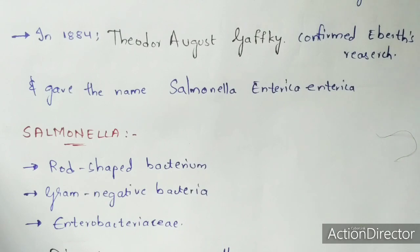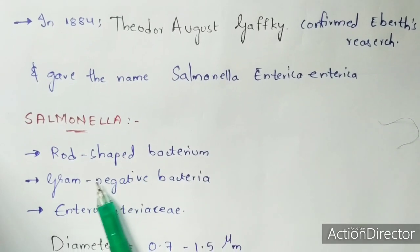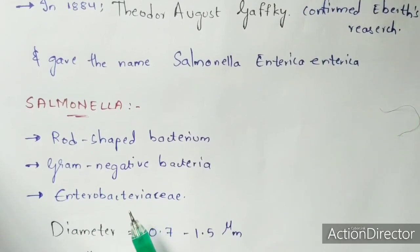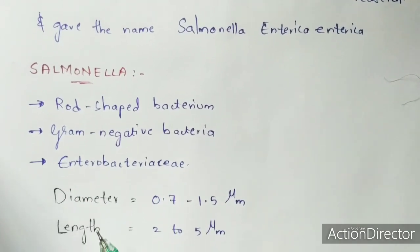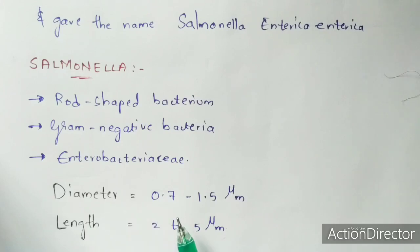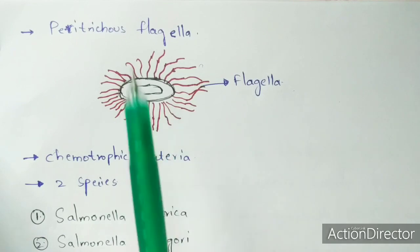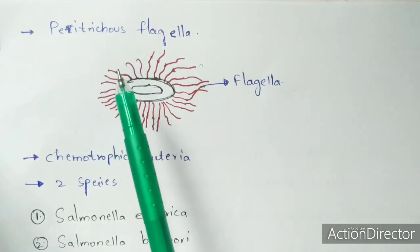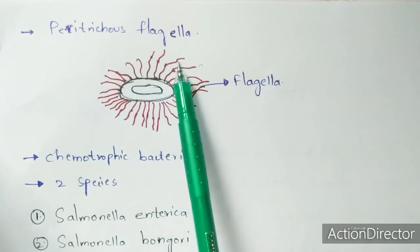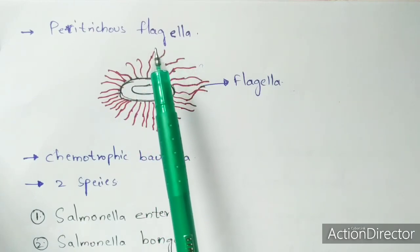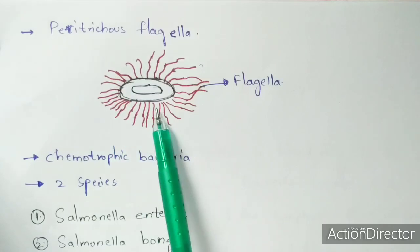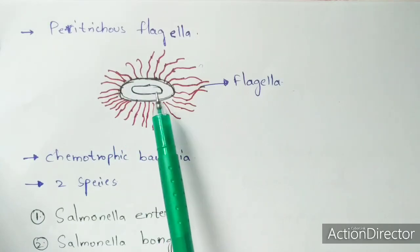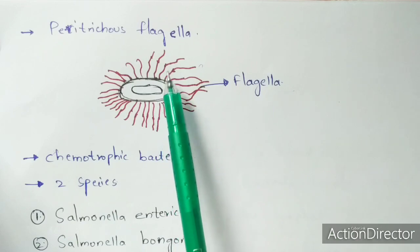Now let us talk about the Salmonella bacterium. Salmonella is a rod-shaped, gram-negative bacterium that belongs to the class Enterobacteria. Its diameter ranges from 0.7 to 1.5 micrometers and its length from 2 to 5 micrometers. The flagella are peritrichous in form — meaning there are many flagella surrounding the entire surface of the bacterium's body.